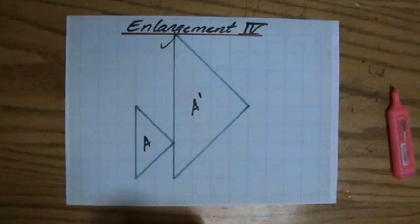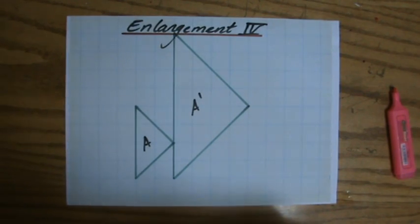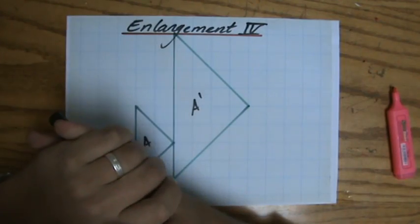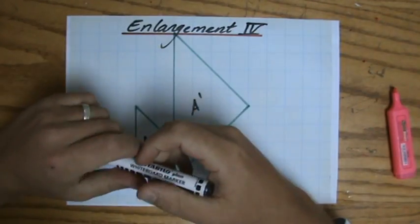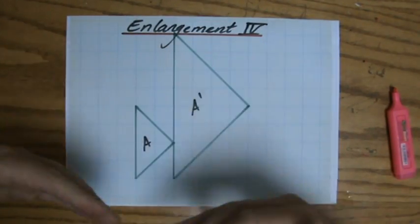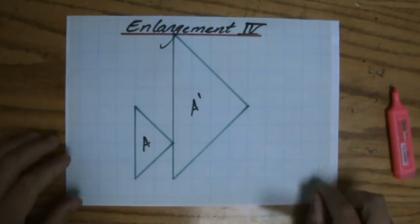So the last video about enlargements, a type of transformation, I showed you how to enlarge with a positive scale factor of more than one. I showed you with a scale factor between zero and one, so a decimal or a fraction. And I showed you how to enlarge a figure with a negative scale factor.